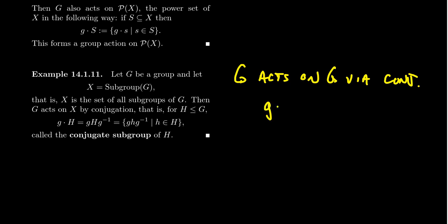So we have G dot X. This is equal to GXG inverse. So a group acts on itself. So taking the previous example, since G acts upon G,